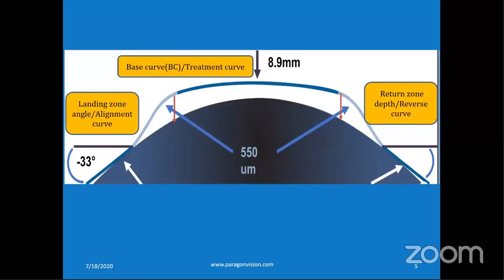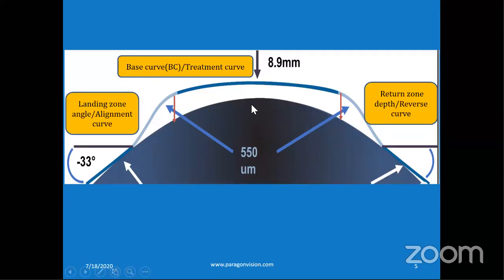Before fitting the ortho-K lenses, you should know about the terminology used during parameter selection. First is the base curve, also known as the treatment curve. This is the central part of the contact lens and is the main pressure point for vision correction. This curve will only change when you need more vision correction - it will not change the fitting of the contact lens. But in conventional lenses, if you change the base curve, the fitting also changes. In ortho-K lenses, the base curve is only for the treatment purpose, not fitting.